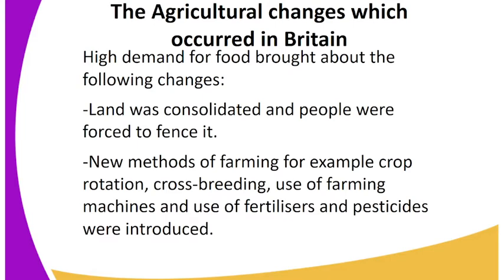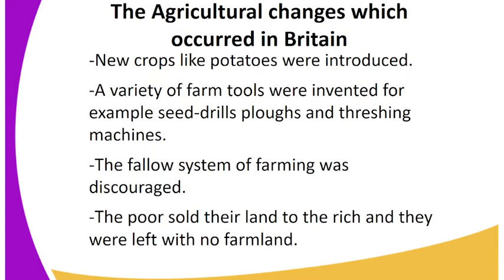Land consolidation encouraged the use of machines due to increased farm size, enabling proper utilization of land. High demand for food brought about the following changes: land was consolidated and people were forced to fence it. New methods of farming — for example, crop rotation, cross-breeding, use of farming machines, fertilizers, and pesticides — were introduced. New crops like potatoes were introduced.